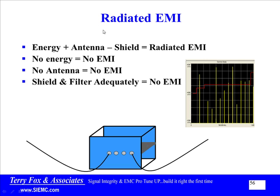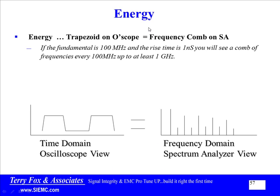If we look at the issue of radiated EMI, this is a situation where if you have energy plus an antenna, you're going to get radiated EMI. The only thing you can do if you've got both is to somehow shield it. But if you have no energy, you will have no EMI. If you have no antenna, you'll have no EMI. You can have quite a bit of noise inside a box, but if you shield and filter adequately, you'll have no EMI. Let's take a closer look at the energy side of this equation.